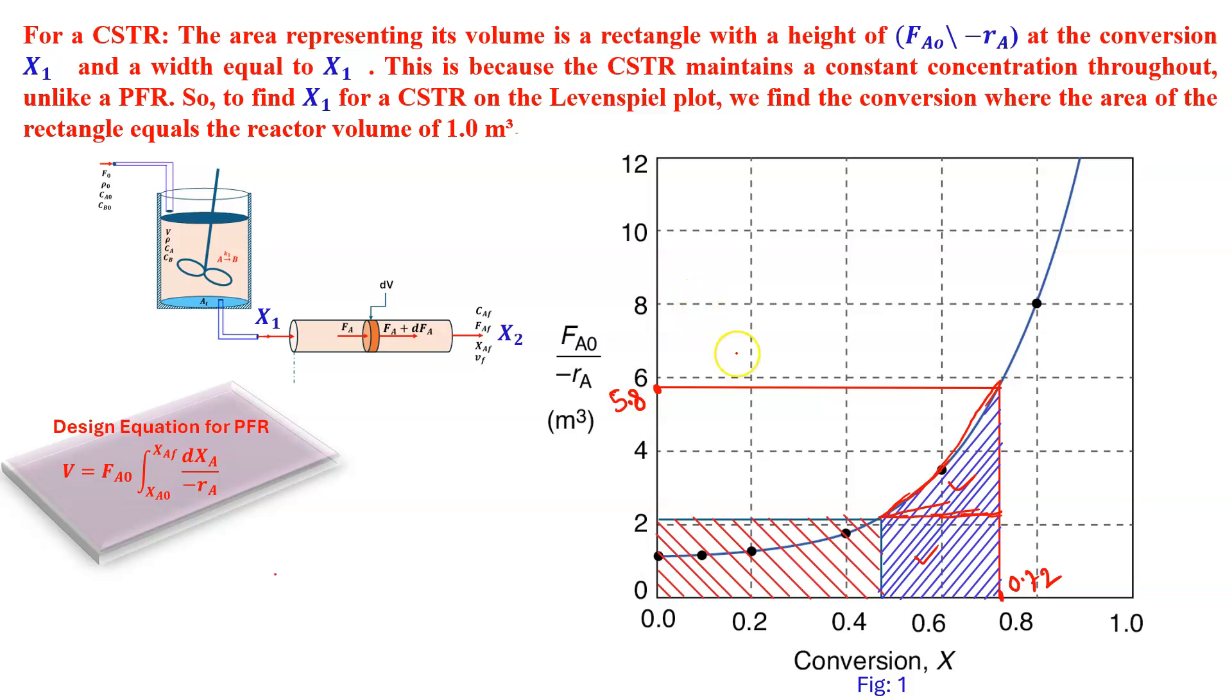For rectangle, this is 0.47, so rectangle area is 0.47 minus 0.72. Minus will come, that is not a problem, into 2.1. We have to take the positive, so that will be 0.72 minus 0.47 into 2.1, that will give something 0.525.